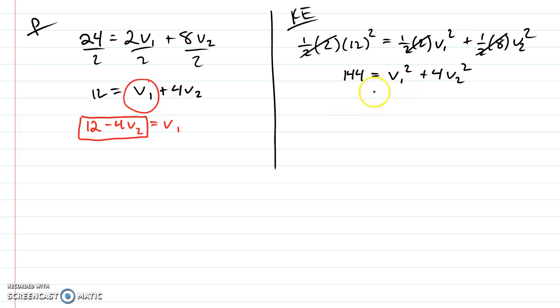So right here, instead of v1, 12 minus 4v2 squared plus 4v2 squared.